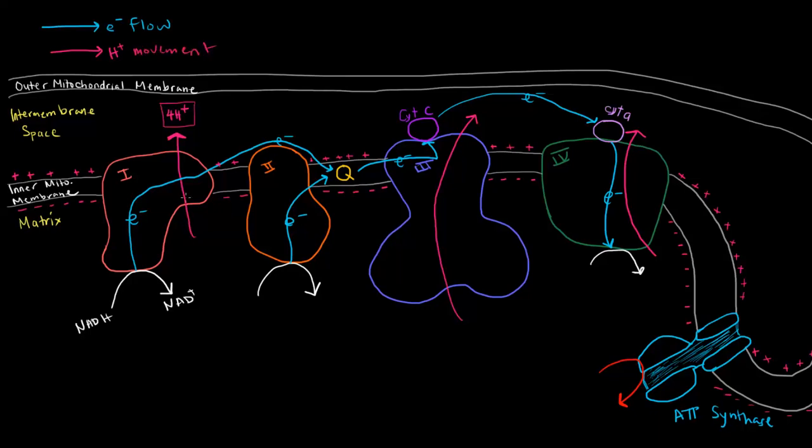Okay. Now, in this case, it's against their gradient. So, at complex one, we know that NADH is oxidized back into NAD+, and we have proton pumping. So, that's what's happening at complex number one. And in addition, these electrons are flowing from complex one over to complex, actually, they don't flow to complex two. They flow over to this Q thing here, which is coenzyme Q.